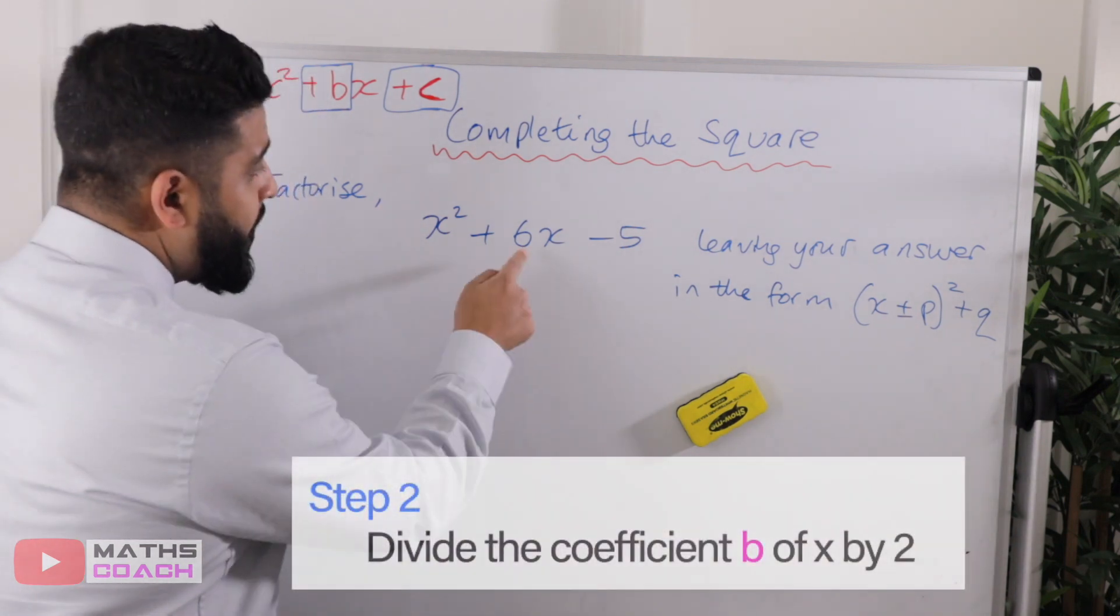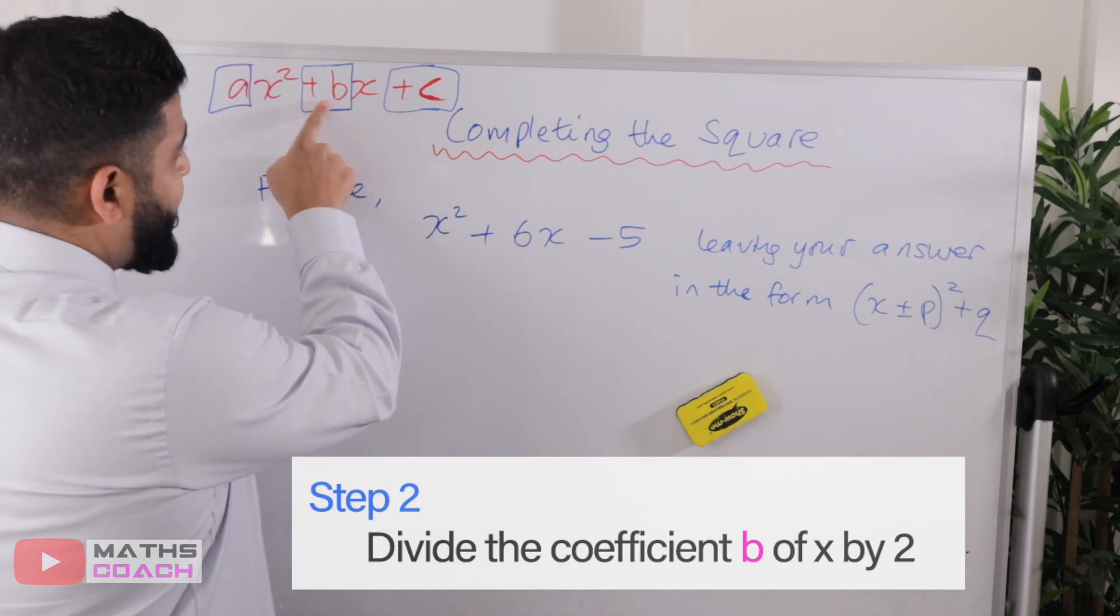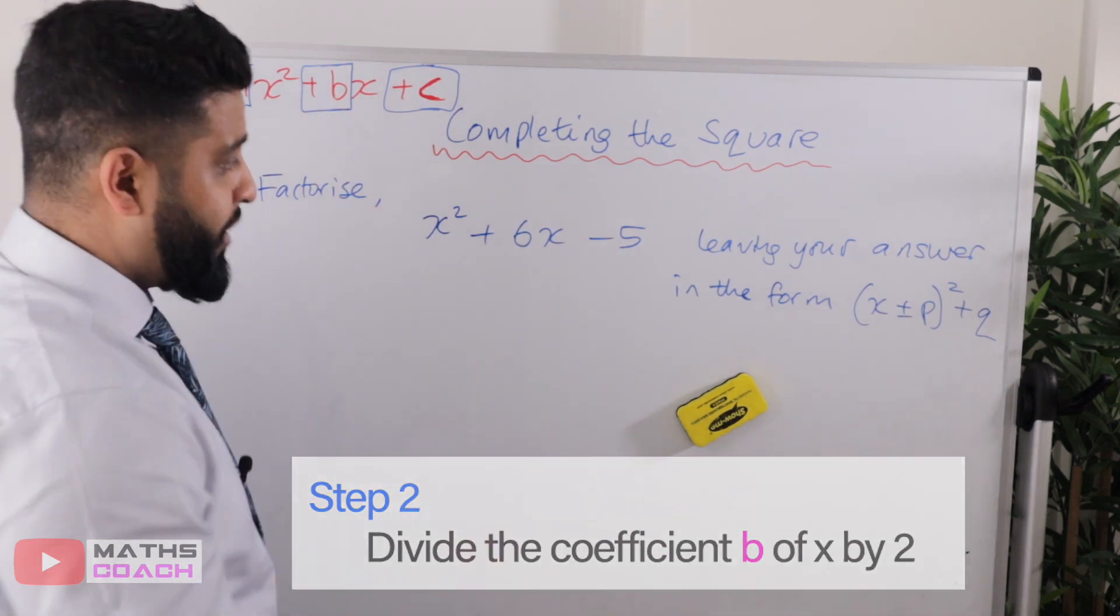Step number two, divide the coefficient of x, the b value, by two.